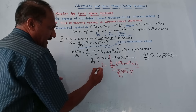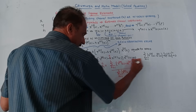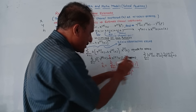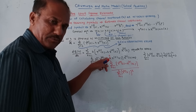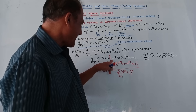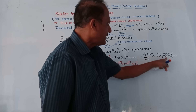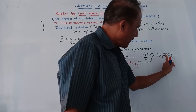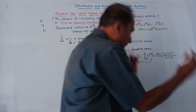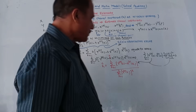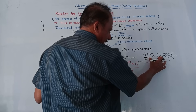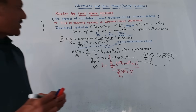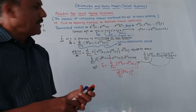This gives: yp(k)·xp(k) − h-cap·xp(k)·xp(k) = 0, which simplifies to the expression for h-cap. Summing over all k and solving gives the relationship for least square estimation: h-cap equals the summation of yp(k)·xp(k) divided by the summation of |xp(k)|².